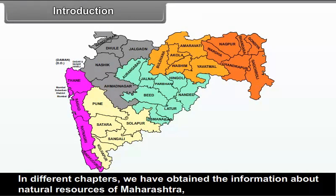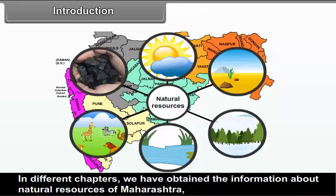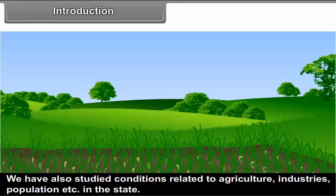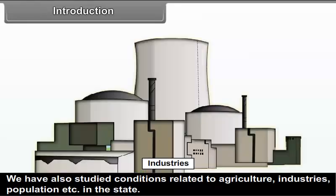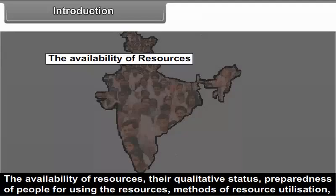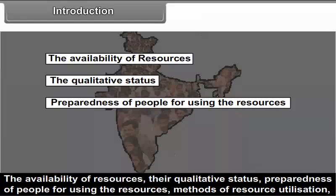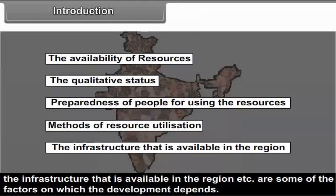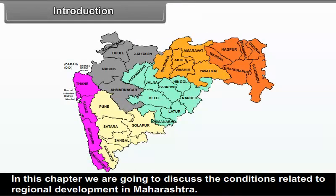In different chapters, we have obtained information about natural resources of Maharashtra, their distribution and utilization in different parts of the state. We have also studied conditions related to agriculture, industries, population, etc. in the state. Using available resources, people from different areas try to attain development of the individuals, the society and that of the region. In this chapter, we are going to discuss the conditions related to regional development in Maharashtra.